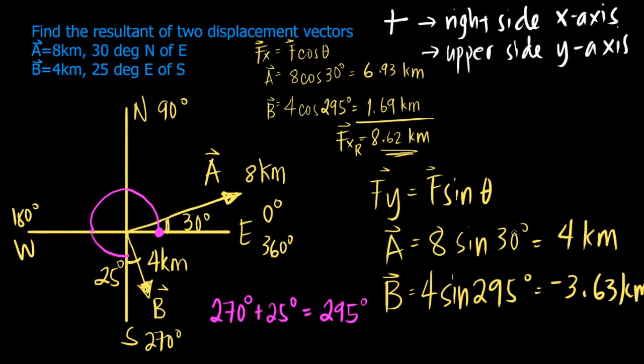Just like what we did with the x-components, let's add all the y-components. So 4 minus 3.63, that is 0.37 kilometers. And this is the resultant for all the y-components.